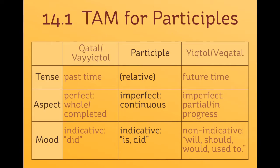Specifically, the time is concurrent with the context — be it past tense, present, or future context. Participles can be used in many different ways in any given context. The aspect information of the participle is that it describes a continuous and ongoing action, and it has indicative mood — it describes an action that happened or is happening.